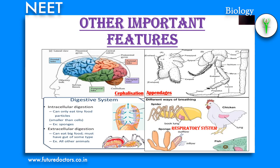Other important features: cephalization is a differentiation of the head and anterior part of the body. It involves the concentration of nervous tissue and sense organs in the head. Appendages are projecting structures of the body that perform specific functions like locomotion, capturing of food, sensation, etc.